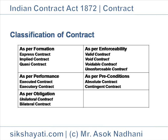As per legal enforceability, a contract may be classified as: Valid Contract; Void Contract — ceases to be enforceable by law; Voidable Contract — enforceable at the option of one party; and Unenforceable Contract — fulfills all requirements except legal formalities. As per dependent preconditions, contracts may also be classified.